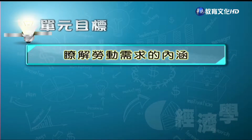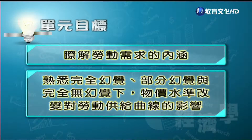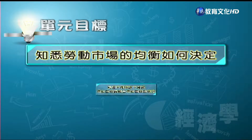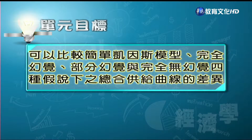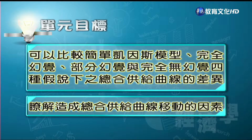也就是劳动市场与总和供给曲线。我们这个单元的目标有几点：第一，了解劳动需求的内涵；第二，了解完全货币幻觉、部分货币幻觉与完全没有货币幻觉之下，货币或物价水准对整个劳动供给曲线的影响；第三，了解劳动市场的均衡如何决定。